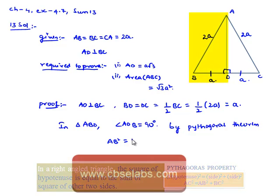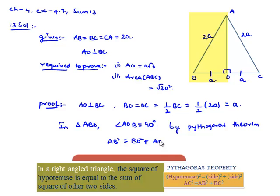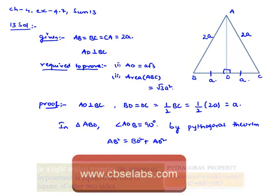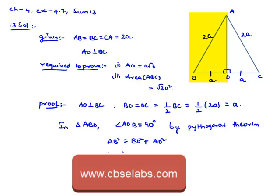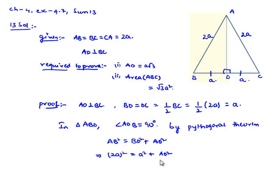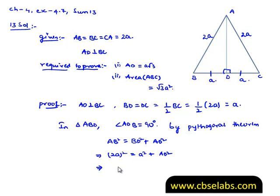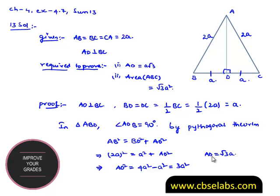BD square plus AD square. That implies AB square, which is 2A whole square, equals BD square, which is A square, plus AD square. This implies AD square equals 4A² minus A², which equals 3A². So AD equals root 3A.